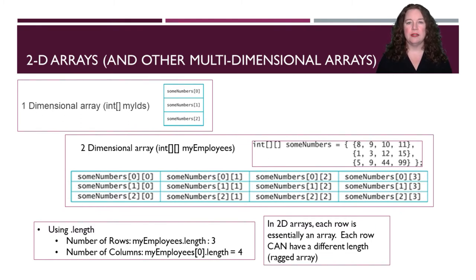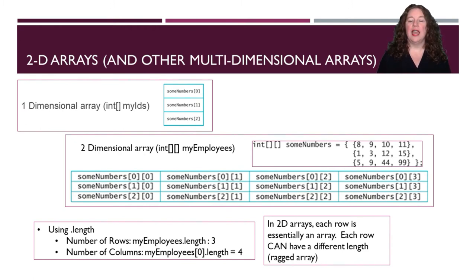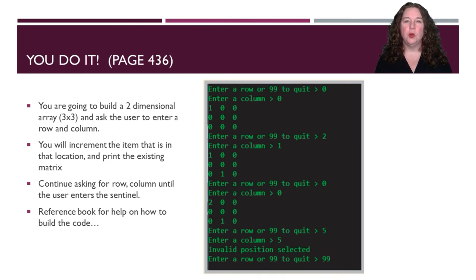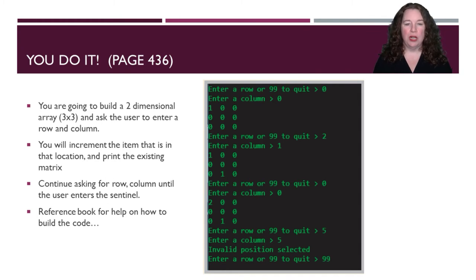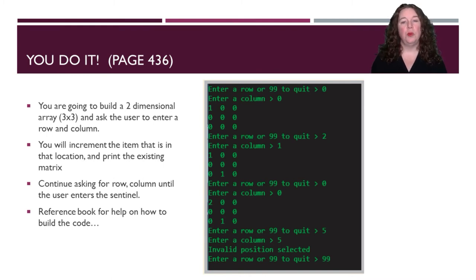In Java, two-dimensional arrays can have ragged arrays, where each row can have a different length. You can have row one with three columns and row two with five columns. It's called a ragged array because if you line them up as a matrix, the ends don't line up neatly. You can do it as long as you visualize each row as essentially a second array. We have an array of arrays, which is how you can do a third level. You can have multi-dimensional arrays.